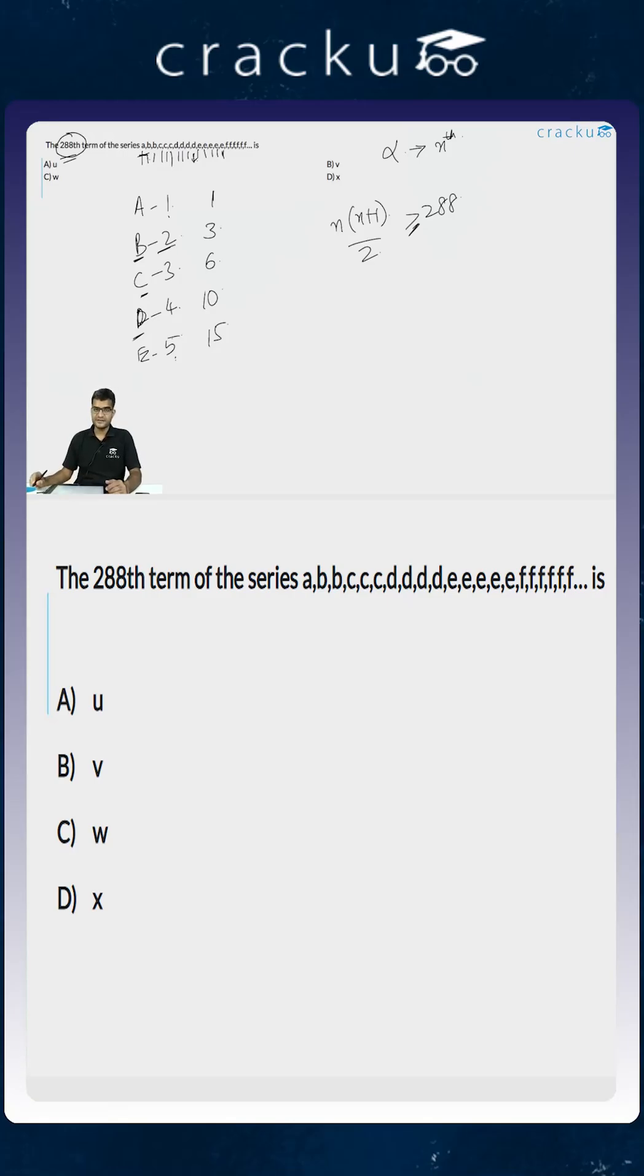Because B is the second alphabet and 1 plus 2 is equal to 3. And the sum of the first n natural numbers—we should know—1 plus 2 plus 3 plus dot dot dot till n is equal to n into n plus 1 divided by 2.